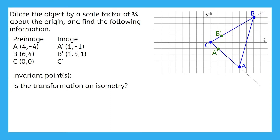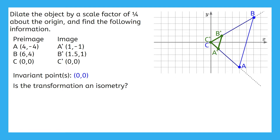Now we can move on to point C. We notice that there isn't a horizontal or vertical movement from the center of dilation to point C, since point C is on the center of dilation. Multiplying no movement by a scale factor is still no movement. This means that C prime is in the same place that C was. Then we can sketch in the entire image. All points on the pre-image move somewhere new to become the image, except for point C, since point C was on the center of dilation. Also, the transformation is not an isometry because although it maintains its original shape, it does not maintain its original size.